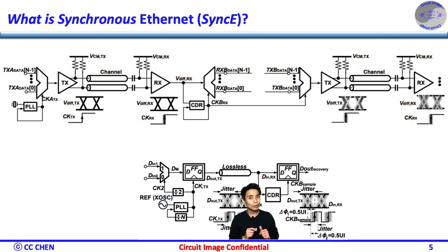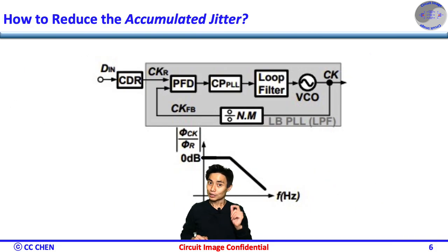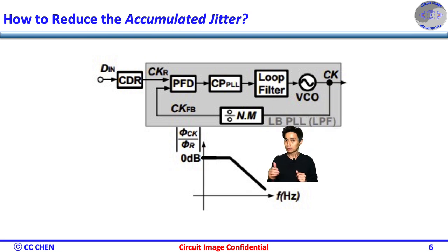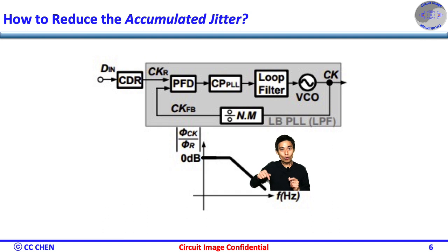Since the RX PLL or clock data recovery (CDR) is supposed to track the input phase over jitter, the question is: how can we reduce the accumulated jitter? To reduce the accumulated jitter, we could add a low-bandwidth PLL after the recovery clock to filter out the high-frequency jitter. The transfer function between the PLL output and its input reference clock is a low-pass response. Therefore, connecting the recovery clock of the RX PLL output to the PLL input reference would filter out the high-frequency jitter.